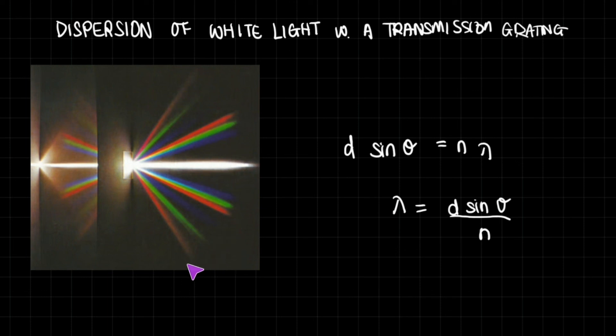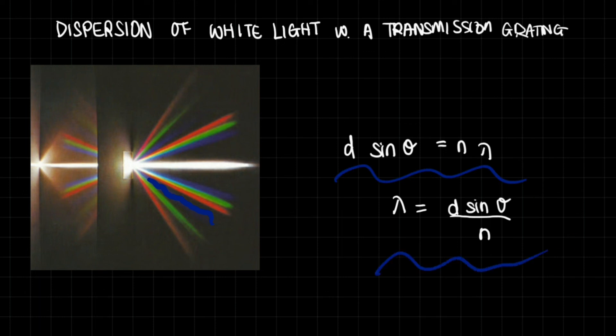In the second order maximum, the difference between colors becomes much more distinct — the purple light is like this, green light is like that, and red light is further still. The reason for this is our equation d sin θ = nλ. That's about it for transmission gratings or diffraction gratings — it's another useful experiment to show that light is a wave. Thank you for watching.